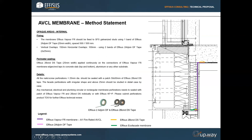Here is an example of a method statement we do in our technical proposals. We analyze the project, consider all the constraints and different substrates, and present our solution. In this detail, we suggested our Vapor FR membrane — shown in purple — applied over the insulation on the internal side, using Ephesus 2 Bond to fix the membrane to concrete. We always take all the details into consideration and go detail by detail with our client, paying attention to everything.